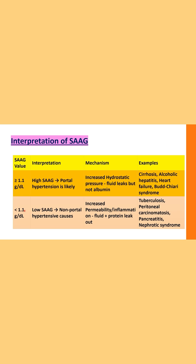If the value is less than 1.1 grams per deciliter, it is considered a low SAAG, and it is most likely due to some other cause not related to portal hypertension, like infection or inflammation. In infectious or inflammatory causes, there is damage to the membrane and it becomes more permeable. Therefore, both fluid as well as protein leak out into the peritoneal cavity, increasing protein in the ascitic fluid, so the difference between serum and ascitic fluid albumin is less — that is why the value will be low.